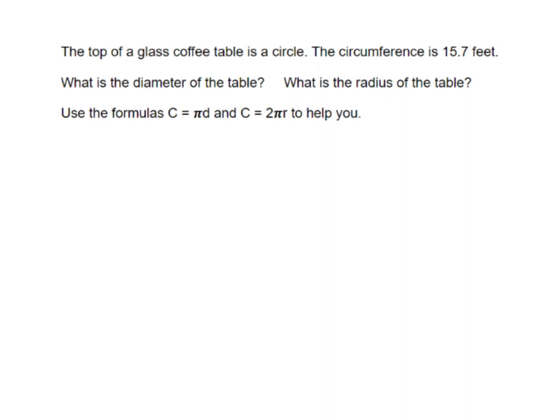In this video, we will talk about how to find the diameter and the radius when given circumference. The top of the glass coffee table is a circle. The circumference is 15.7 feet. What is the diameter of the table and what is the radius of the table?